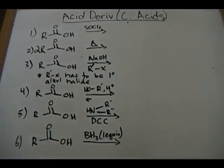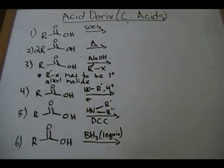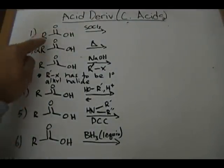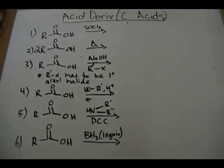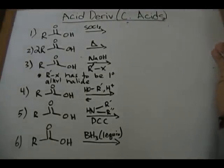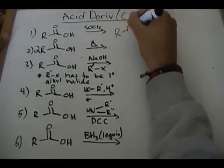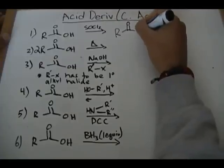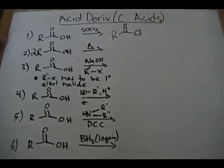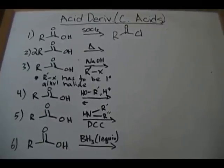The first reaction: we have a carboxylic acid with SOCl₂, known as thionyl chloride. All you have to do when you see a carboxylic acid with this reagent is replace the OH with a chlorine. Nice and simple — there's your carboxylic acid with the chlorine.